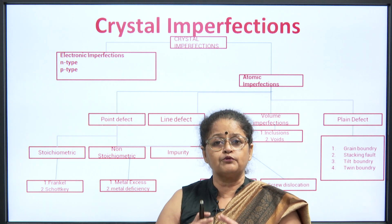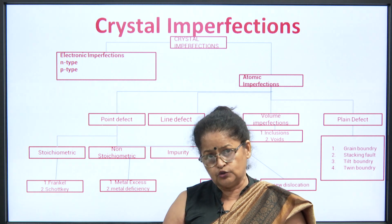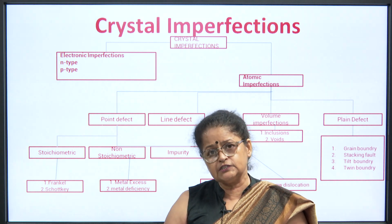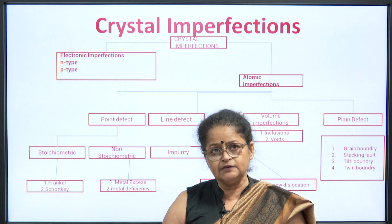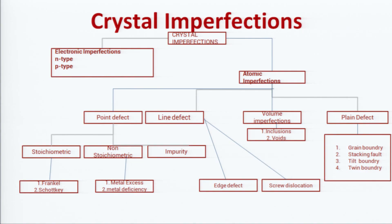Crystal imperfections are broadly divided into two classes: electronic imperfections and atomic imperfections. In the case of electronic imperfections, it deals mainly with electrons — if electrons are in excess it is n-type, and if electrons are a little less it is p-type. We had already covered n-type and p-type semiconductors in the previous lecture, so we need not discuss them here. Atomic imperfections are the ones we are going to take up in this lecture and discuss in detail.